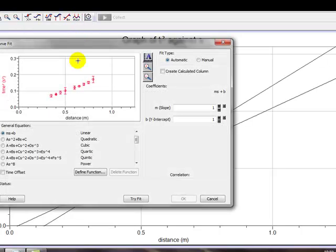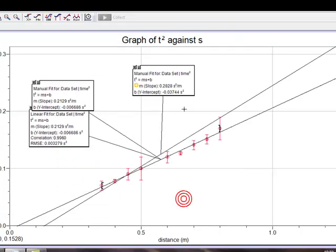We now repeat the whole procedure with the least steep line. We try a fit again. Go to Manual. Back to the main window.